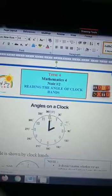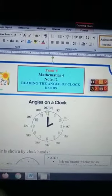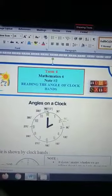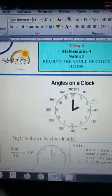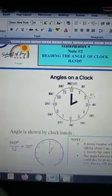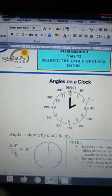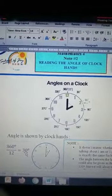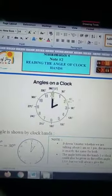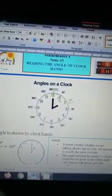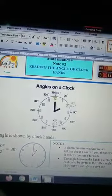So, we can get the angle between 12 and 1 by dividing 360 degrees divided by 12 number. 360 degrees divided by 12 equals 30 degrees. It means that the angle between 12 and 1 is 30 degrees, 1 and 2 is 30 degrees, and so on.